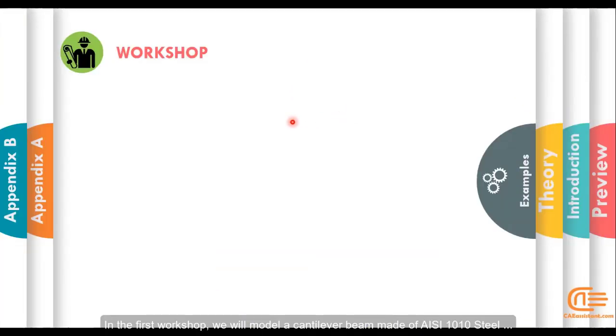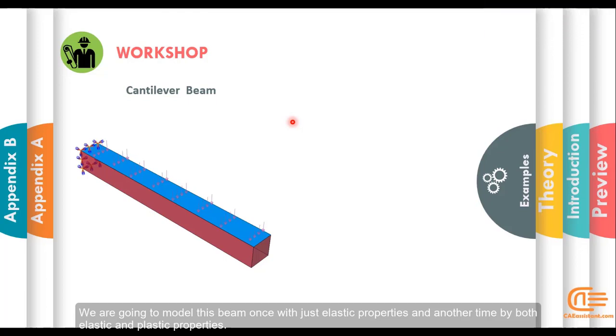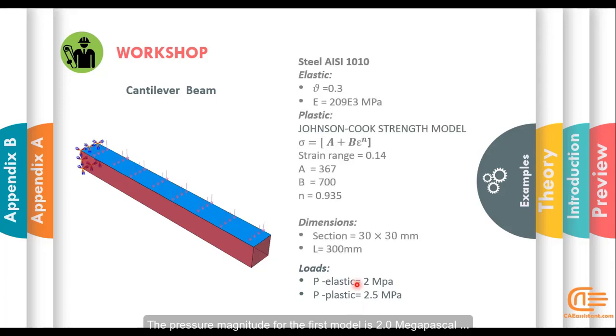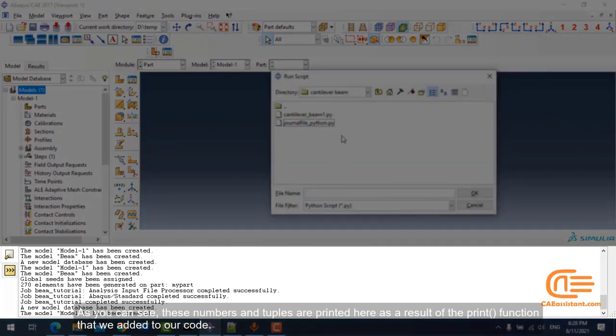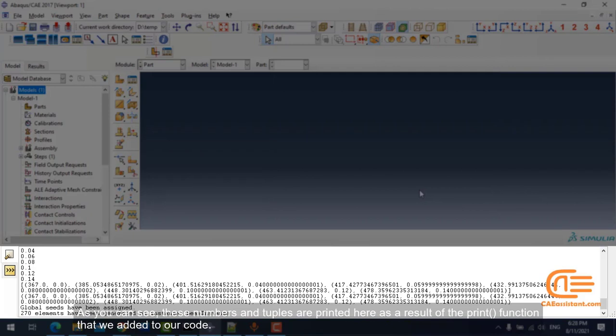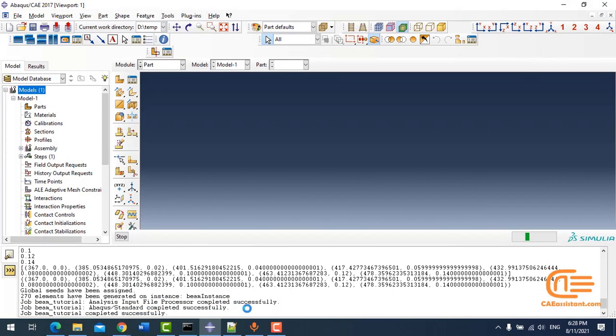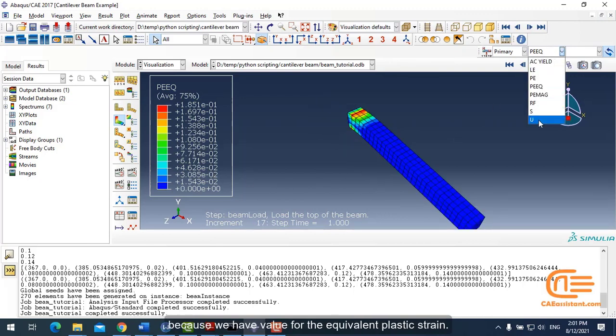In the first workshop, we will model a cantilever beam made of AISI-1010 steel in which a pressure load is applied on its top face. We are going to model this beam once with just elastic properties and another time with both elastic and plastic properties. The pressure magnitude for the first model is 2.0 MPa. As you can see, these numbers and tuples are printed here as a result of a print function that we added to our code. You can see that our model entered the plastic deformation area because we have valued the equivalent plastic strain.